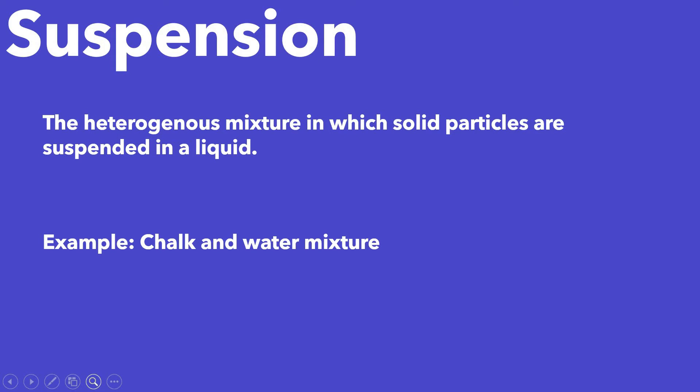An example is chalk and water mixture, or sand and water. These images show us what suspension is. Here we have taken water and added sand in it. The sand doesn't dissolve in water — it just gets suspended throughout the water, but after some time it settles down. So this shows that one solid particle, which is sand, is suspended in another liquid, which is water. This kind of heterogeneous mixture is suspension.